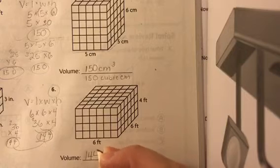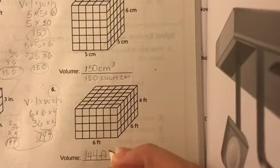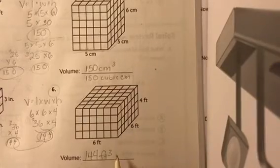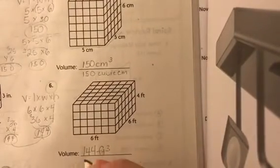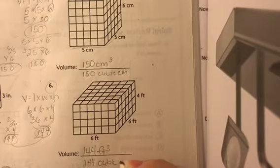So your volume we decided was what? Right, 144, unit is feet, cubed. And again I can write it with a 3 standing for 3 dimensional, or I can write it as 144 cubic feet.